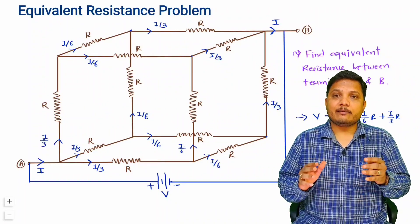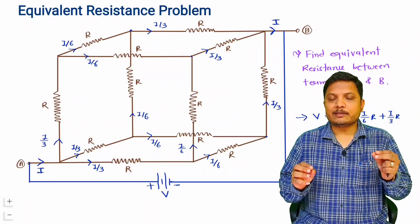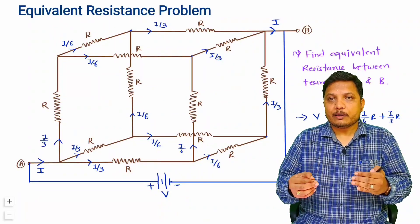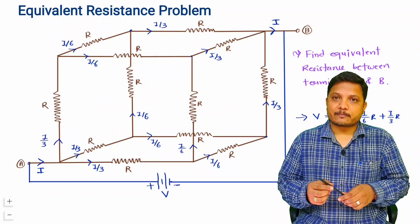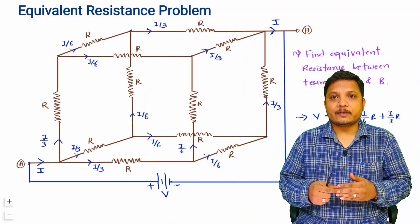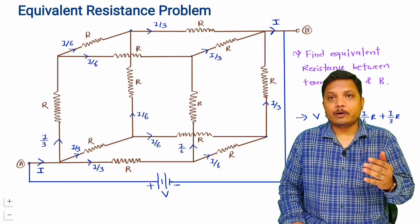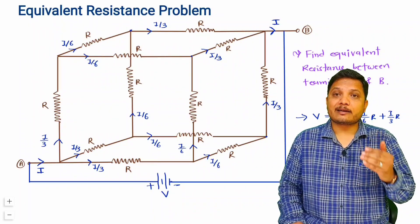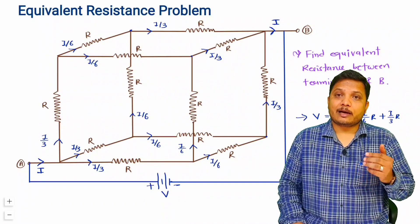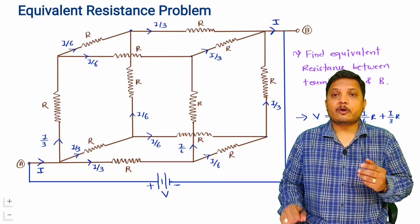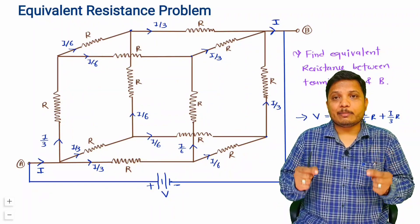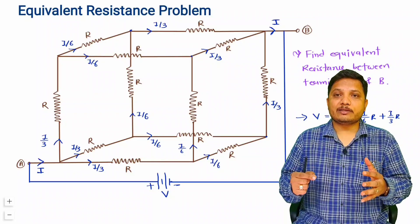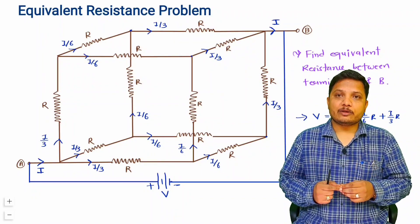Whenever you encounter this type of question, observe how current distributes in the circuit, apply KVL along a loop, and calculate the equivalent resistance. I will show more problems using network symmetry, star-delta conversion, and series-parallel methods. Check the network theory playlist — it will help you solve all categories of equivalent resistance problems. Thank you for watching.